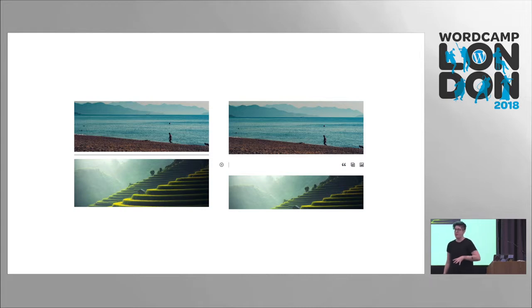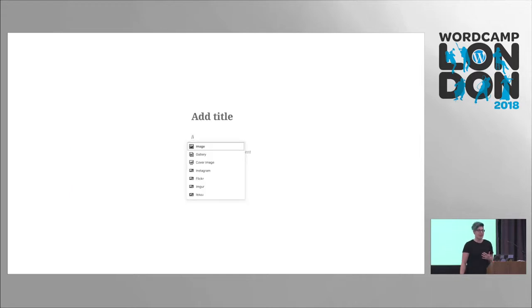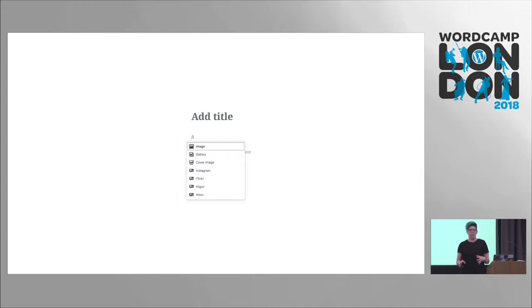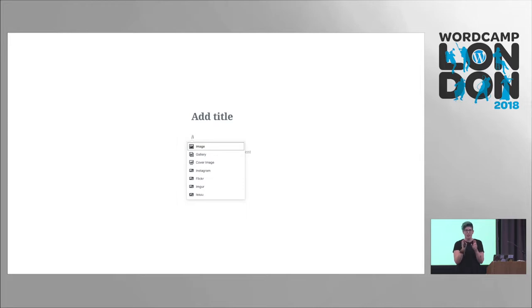One of my favorite ways of adding blocks is using the forward slash command. Just like in Slack or other apps, you can do this to bring up various block types. For me it's a really fast way of writing — as you're writing your content you can use it. It's a great way to just use the keyboard and create that flow as you're writing.